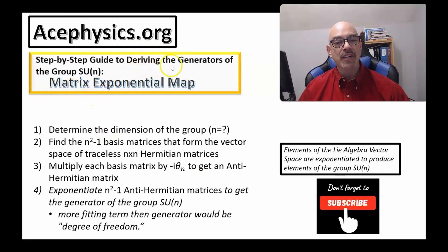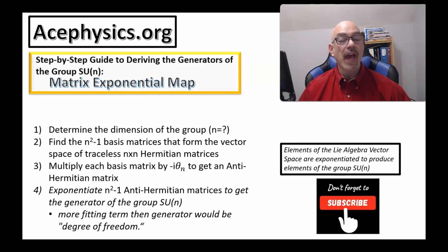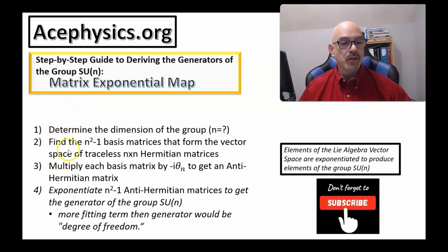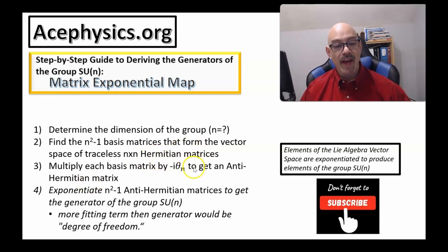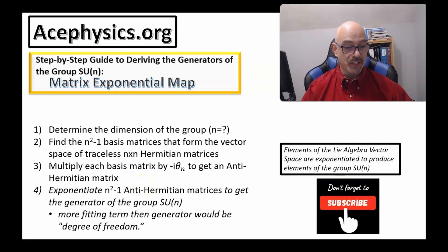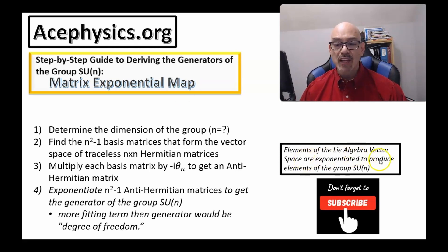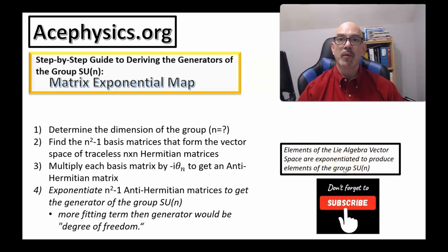Here is a step-by-step guide to deriving the generators of the group SUN through the matrix exponential map. First, determine the dimension n. Second, find the n²−1 basis matrices that form the vector space of traceless n-by-n Hermitian matrices. Third, multiply each matrix by −i·θ_n to get an anti-Hermitian matrix. Fourth, exponentiate the n²−1 anti-Hermitian matrices to get the generators of SUN. Elements of the Lie algebra vector space are exponentiated to produce elements of the group SUN.